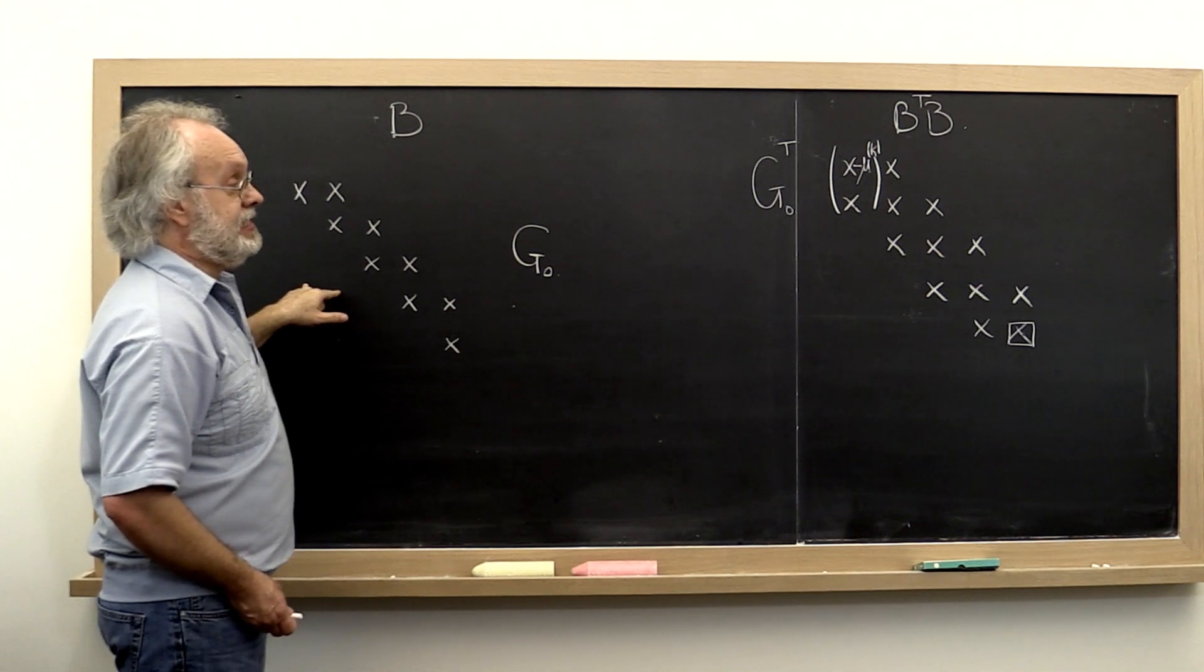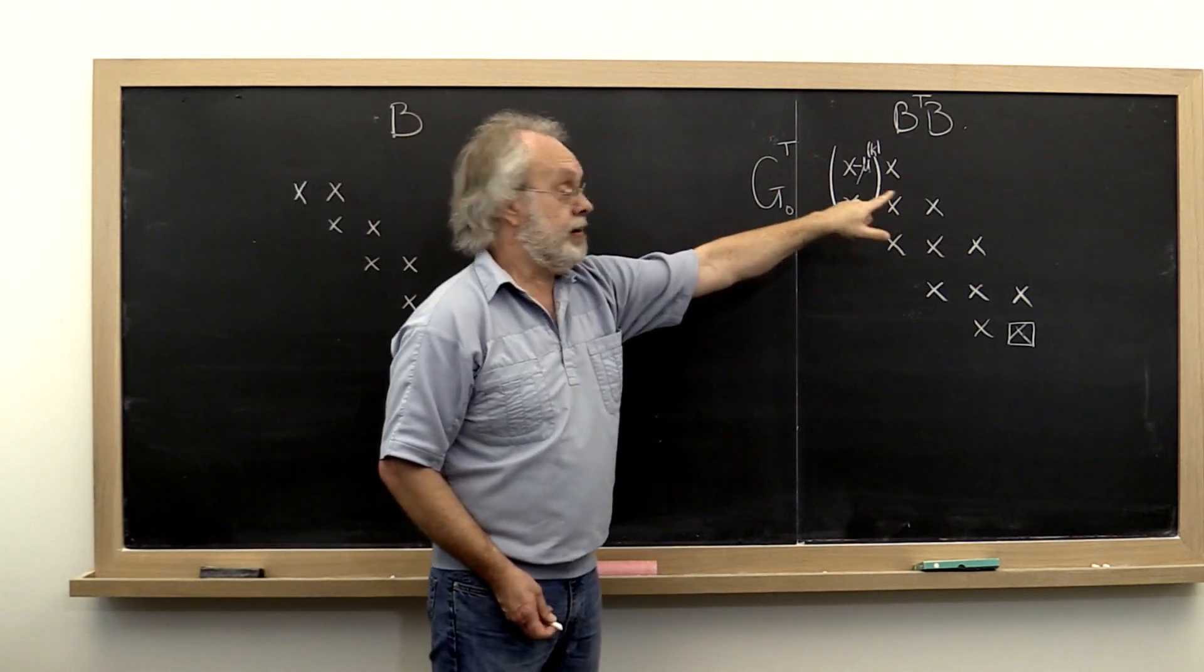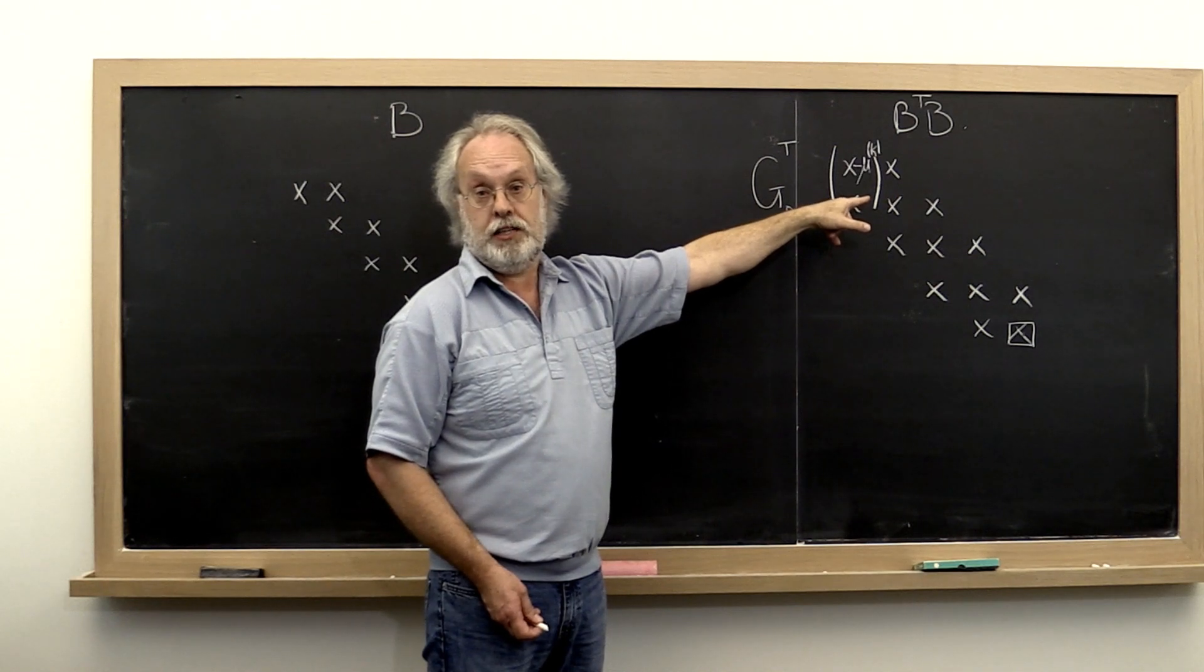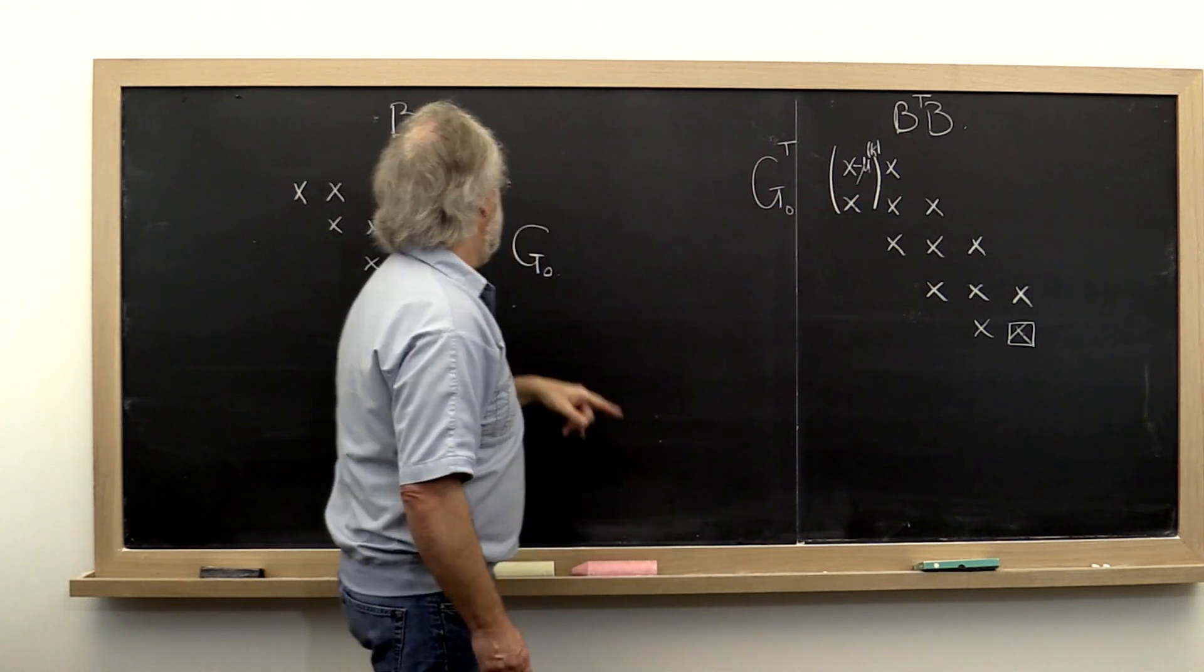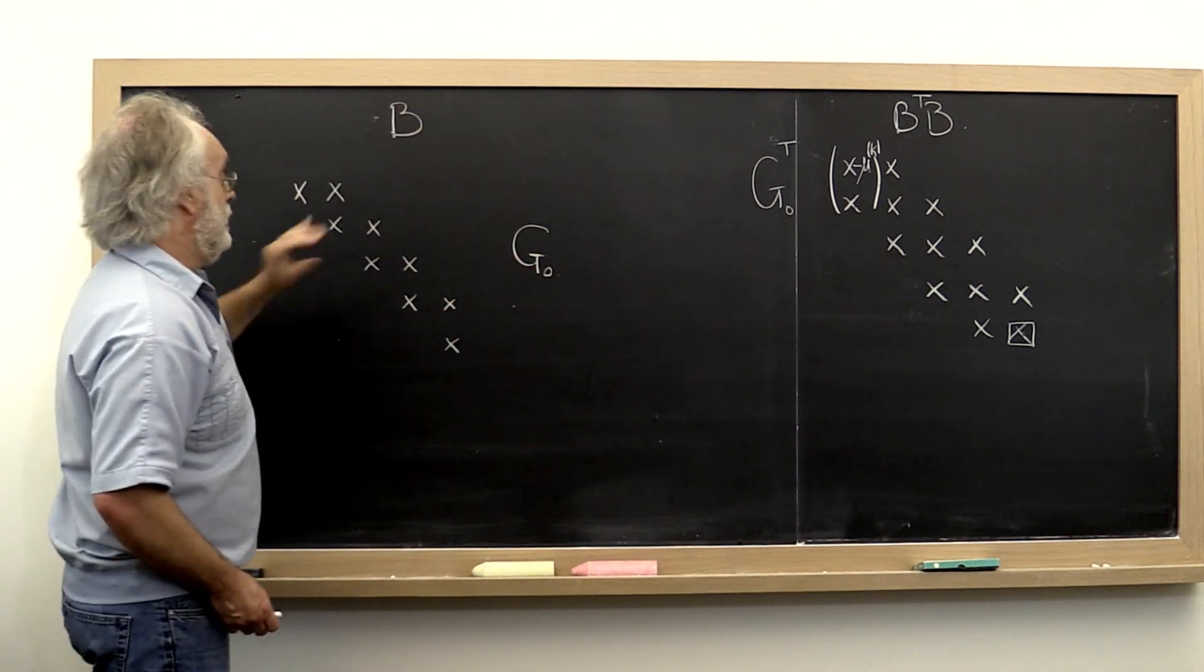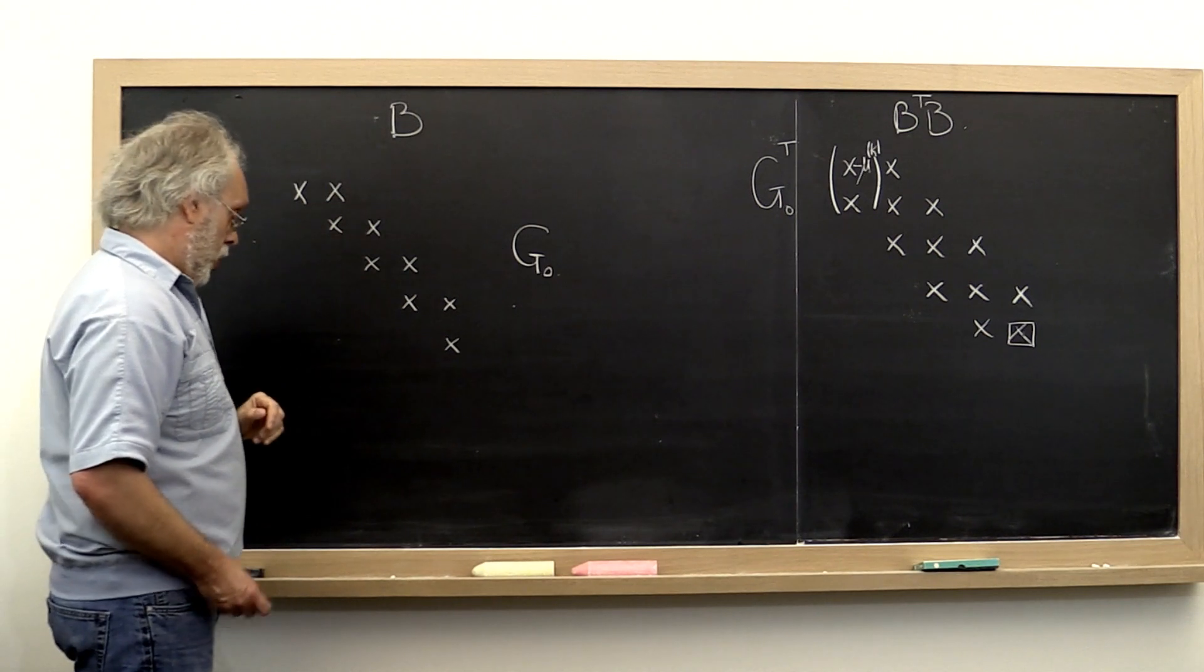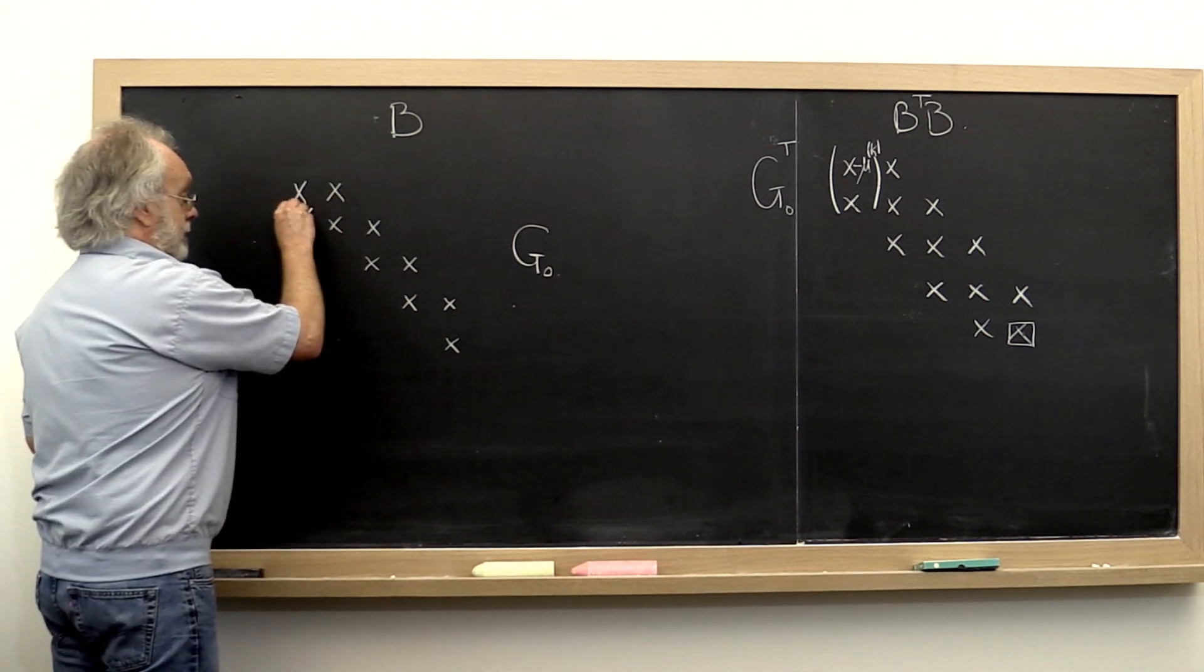And that has the same effect as applying it from the left and the right to the matrix B transpose B. Now if you apply the Givens rotation from the right to this bidiagonal matrix, what do you get? You get a fill-in right there.